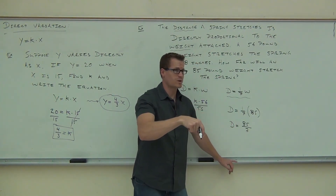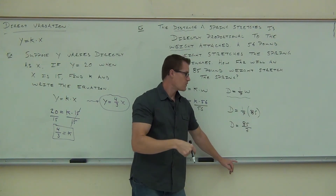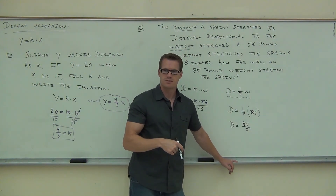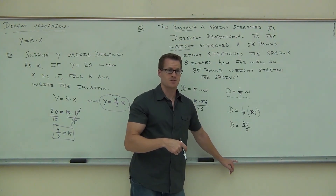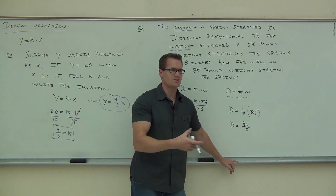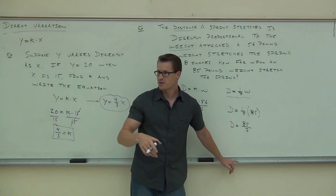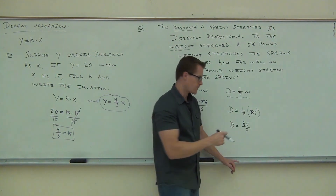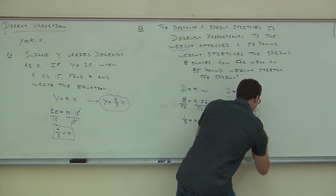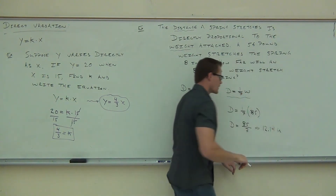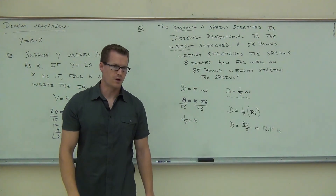Or you can use your calculator to get a decimal, because typically you wouldn't say 'I just traveled 85 over 7 inches.' So maybe translate this into a decimal for a real-life situation. The answer is approximately 12.14 inches — so that spring stretches about 12.14 inches.